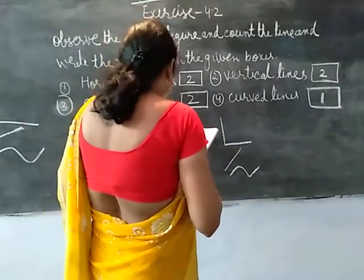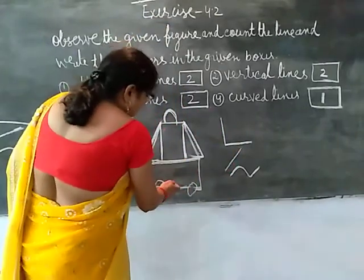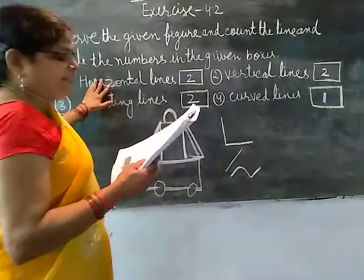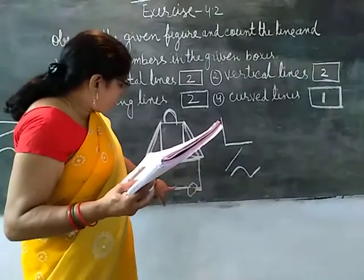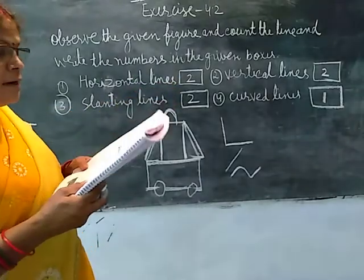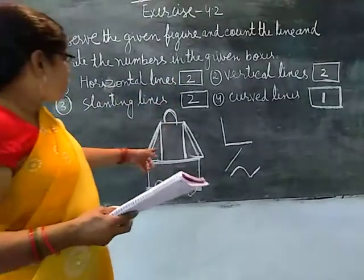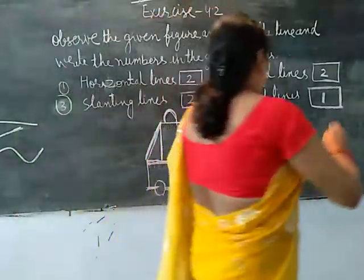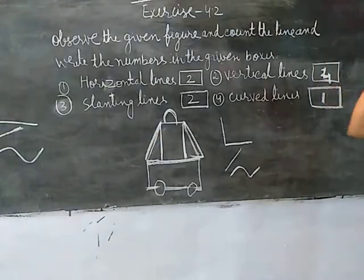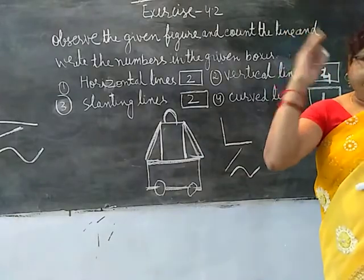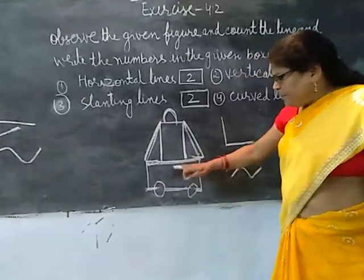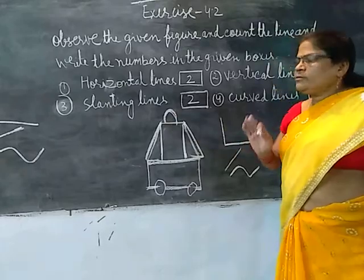Horizontal is like that — sleeping line. Horizontal means sleeping line, one and two. Horizontal means sleeping line. Vertical line means standing line. Standing line: one, two, three, four. Down line: one. Vertical line means standing line. Vertical means standing line. Standing line: one, two, three, four. Sleeping line: one, two. Curl line: one. You understand?